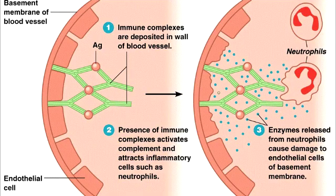What is type 3 hypersensitivity? Type 3 hypersensitivity is when antigen-antibody complexes are formed that are not adequately cleared by the innate immune cells. Therefore, these antigen-antibody complexes start accumulating, giving rise to an inflammatory response and attraction of leukocytes. Type 3 hypersensitivity is when you have formation of immune complexes.